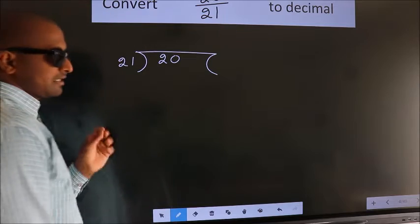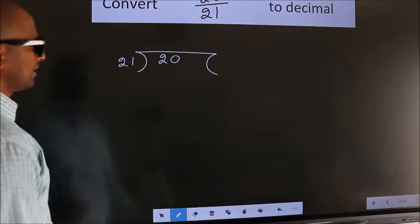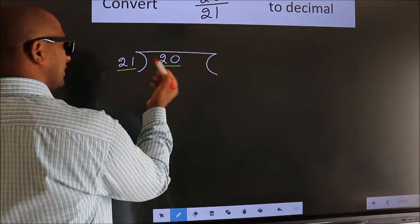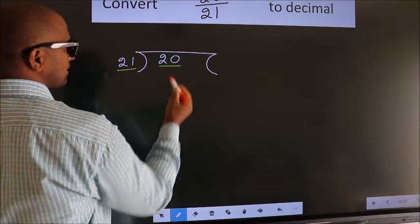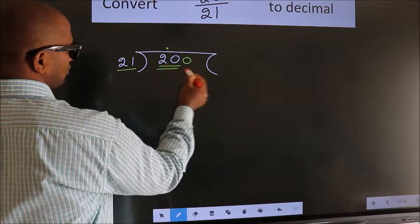This is your step 1. Next. Here we have 20. Here 21. 20 smaller than 21. So what we should do is, we should put dot, take 0. So 200.